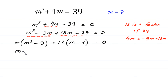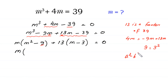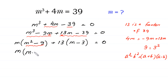Next, note that 9 is the same as 3 squared. According to the algebraic identity a squared minus b squared equals (a plus b)(a minus b), we can factorize m squared minus 3 squared as (m plus 3)(m minus 3).